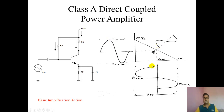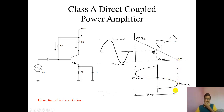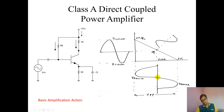As input voltage increases, output voltage decreases, reaching a minimum near zero. If input voltage is decreasing, output voltage will increase and attain a maximum value of VCC. Can output voltage go beyond VCC? No, it is not possible. Output voltage cannot go beyond VCC — it will go maximum up to VCC.